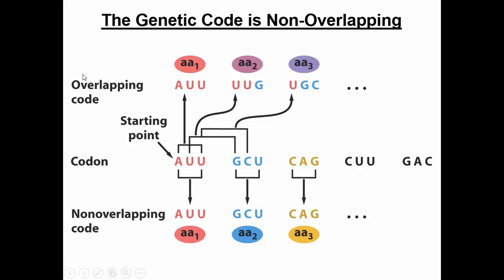If we looked at what other options could have been — the genetic code could have been overlapping, which it's not, but it could have been. What that would mean is the first three letters encode for the first amino acid, then you shift over one base, and the last two bases of that codon help form the next amino acid. So overlapping would be A-U-U is the first amino acid, shift over one base, and then U-U-G is the next. This is not how the genetic code functions — the genetic code is not overlapping.